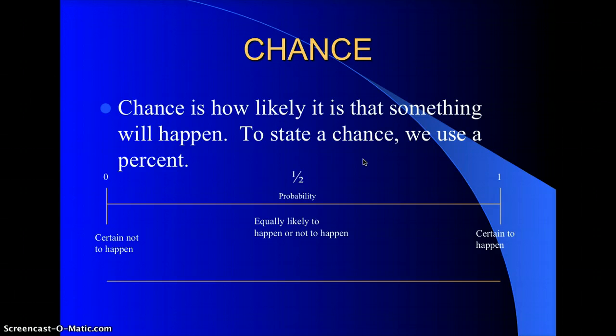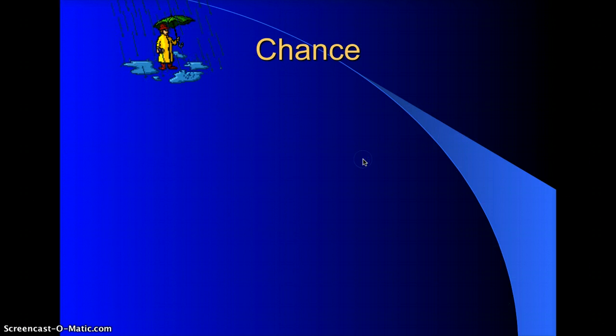Percents of chance is still the same thing. Your numbers are the same, it's just got that percent sign. So I've got zero percent, it's certain not to happen. Or I've got 50 percent, it's a 50 percent chance, so it's just as equally to happen as it is not to. And then you have 100 percent, that it's certain to happen.